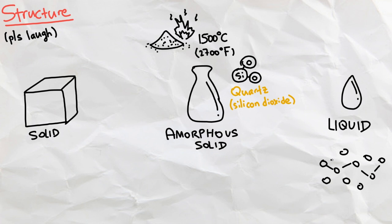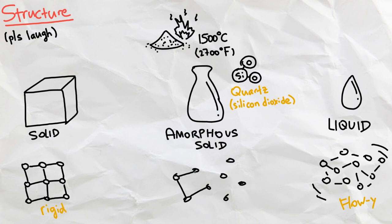As silicon dioxide melts into a liquid, those molecules become flowy, but when they are cooled again, instead of becoming orderly and rigid like in a regular solid, they actually connect at random angles in an irregular pattern. This weird arrangement is what makes glass an amorphous solid. It is definitely solid, but its molecules aren't exactly orderly.